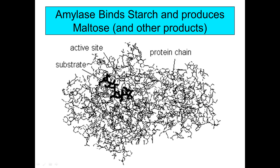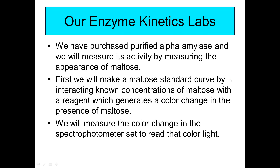This is a diagram of the carbohydrate starch binding into the enzyme amylase. Here is the active site, the substrate, and the protein chain, with this kind of surface interaction going on. The enzyme amylase is binding starch and producing maltose, as well as a few other carbohydrates.